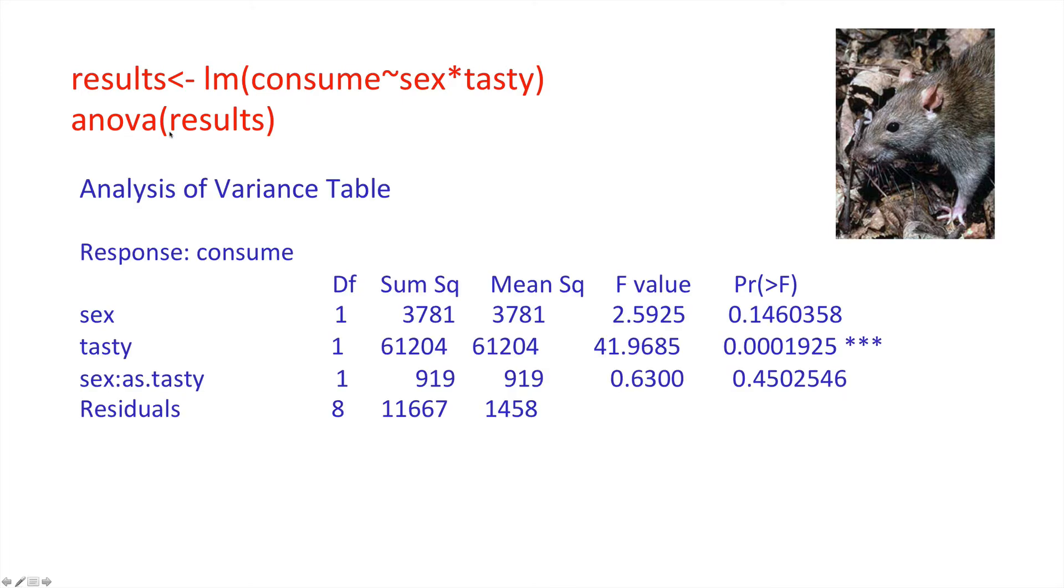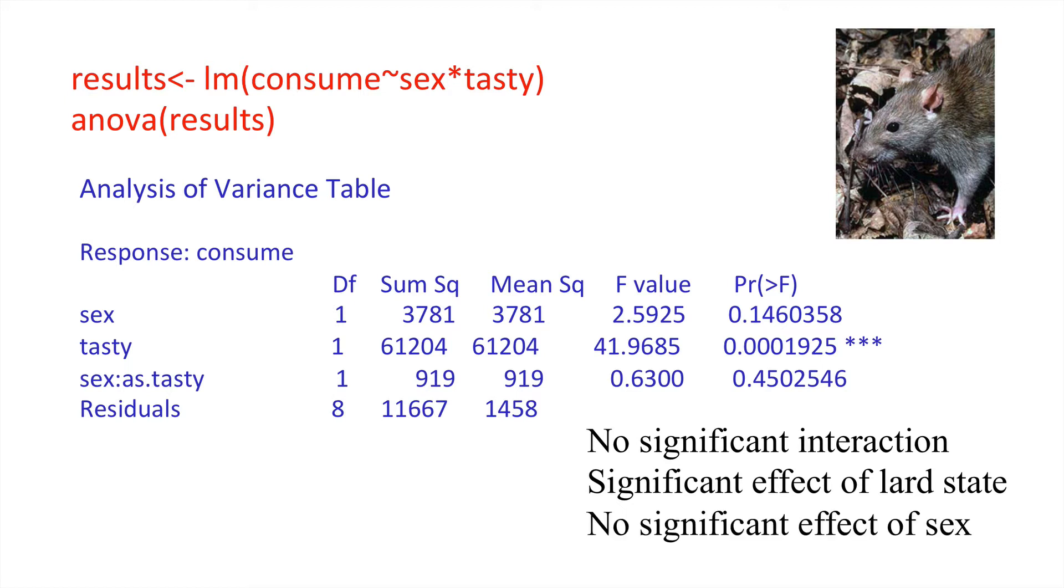And we can plot out our results. So what do these results indicate? Well, I find it particularly useful to start at the bottom and move from interactions to main effects. Because if your interaction is significant, then it's clear that those predictor variables play some role in affecting that response, whether or not those predictor variables are significant as main effects. But in this case, there is no significant interaction in that our p-value is relatively high. We would get that outcome or a more extreme in a high proportion of cases, even if the null hypothesis of there being no interaction were true. But we can say that there's a significant effect of lard state in that our tasty predictor is highly significant. And there is no significant effect of sex on the consumption of the lard.